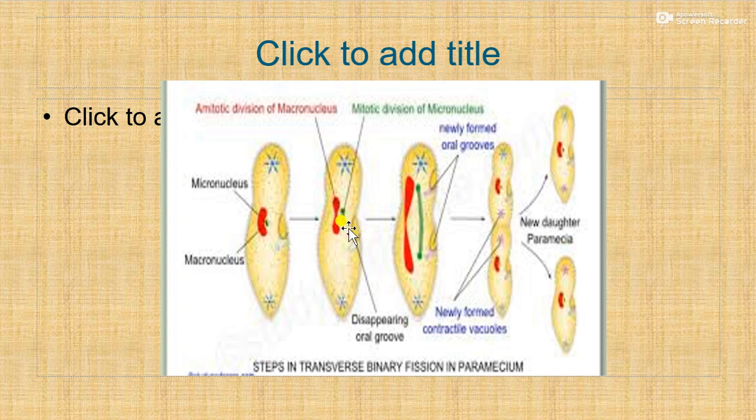The nuclear membrane remains intact by the last stage of mitosis. The micronucleus becomes elongated and its two ends become organized into daughter micronuclei. Simultaneously, the macronucleus divides amitotically, randomly distributing its chromosomes between the two newly formed macronuclei.